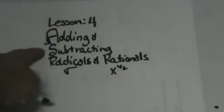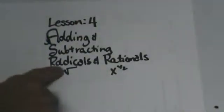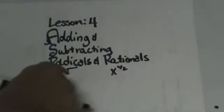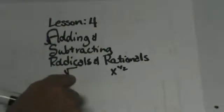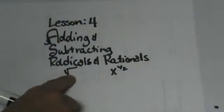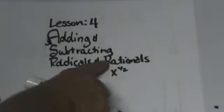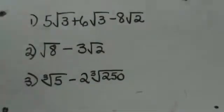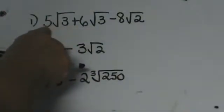Hi, welcome back. We are doing lesson 4 on adding and subtracting with radicals and rational expressions. What we mean by radicals are just square roots, cube roots, fourth roots, fifth roots, and rationals are the exponents that are fractions. So that is what we are going to look at now. Let's start with our radicals first.